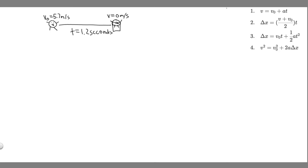In this problem, we're told the infamous chicken is dashing towards home plate with a speed of 5.2 meters per second when he decides to hit the dirt. The chicken slides for 1.2 seconds, just reaching the plate as he stops — safe, of course. Part A asks for the magnitude and direction of the chicken's acceleration, and Part B asks how far did the chicken slide.